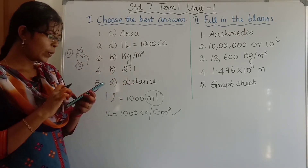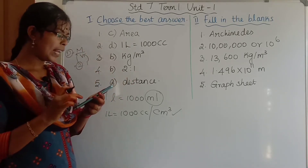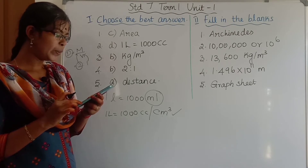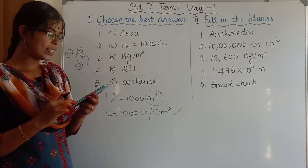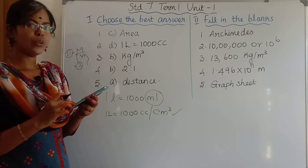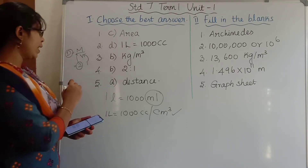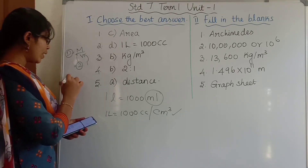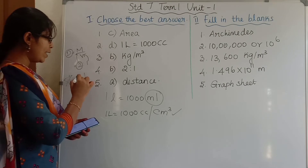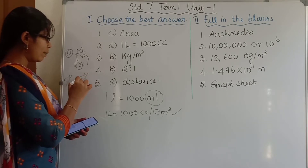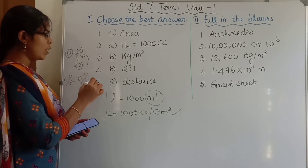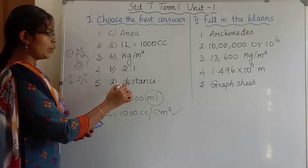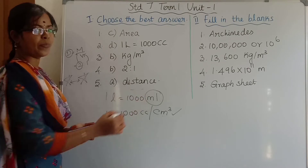Fifth question: light year is the unit of what? For measuring distances to stars, we represent it using light year. It is the unit of Option A: distance.